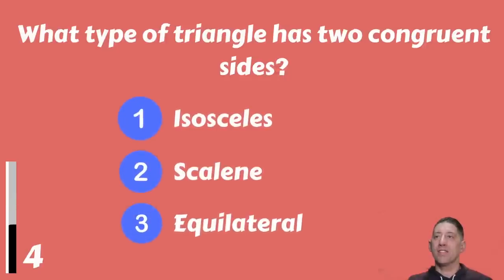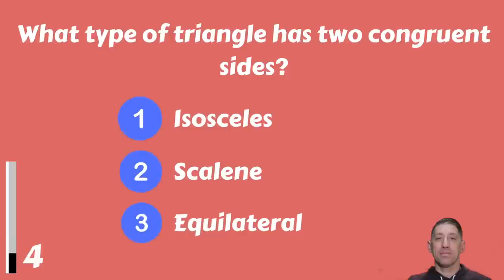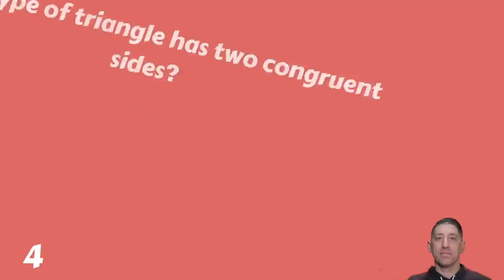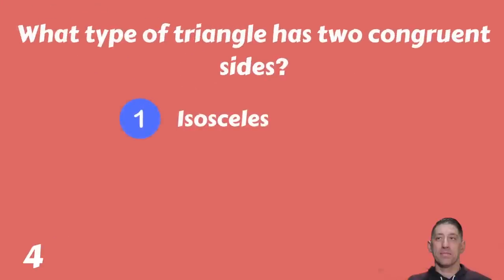What type of triangle has two congruent sides — isosceles, scalene, or equilateral? The answer is isosceles.